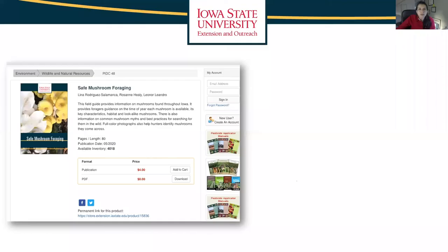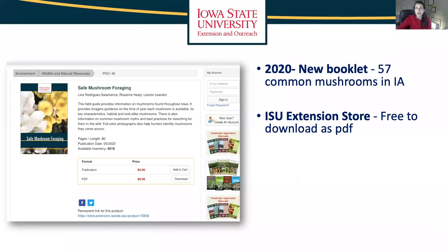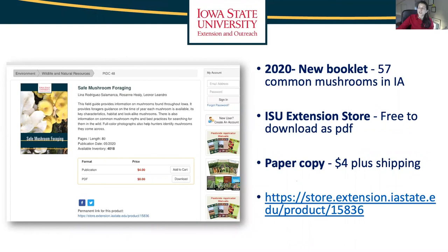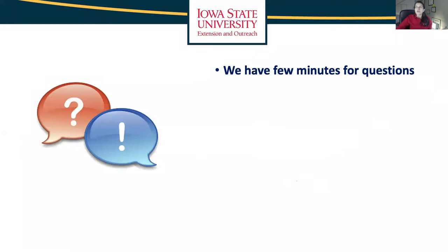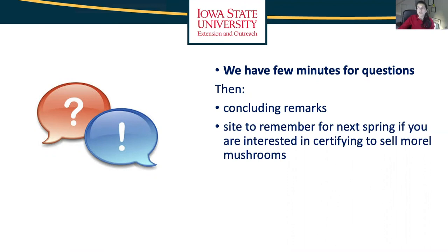To wrap up, you can download our Safe Mushroom Foraging guide with 57 common mushrooms in Iowa for free as a PDF — it works really well on your phone. You can get a paper copy for $4 plus shipping — a great Christmas gift. If you're interested in the training to become certified to sell morel mushrooms, go to bit.ly/morelcert. Normally at the beginning of the year in January or February we have the dates. There may be a chance that some more mushrooms are added to the certification, depending on rulings from the departments of inspections and appeals.